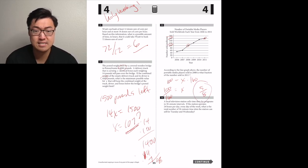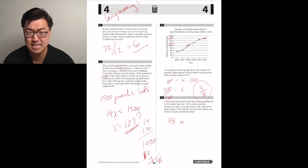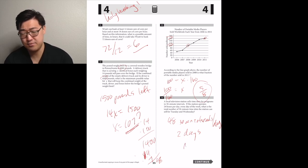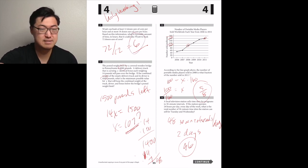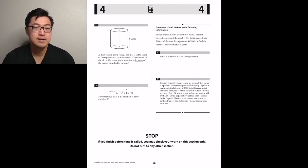A local television station sells time slots for programs in 30 minute intervals. If the station operates 24 hours per day, every day of the week, what's the total number of 30 minute time slots the station can sell for Tuesday and Wednesday? They just 24 hours straight. That means that there's 48, 30 minute segments in there. Cause there's two 30 minute segments per hour. And then if there's two days, then 96, 48 times 2.